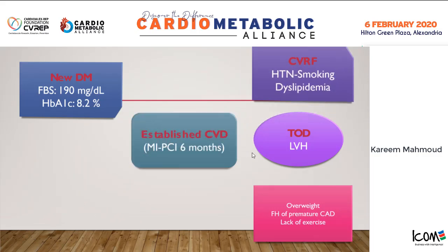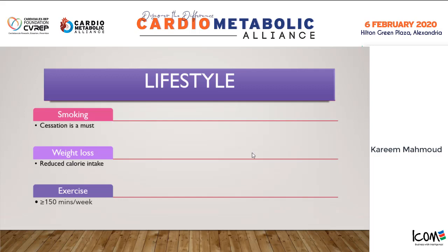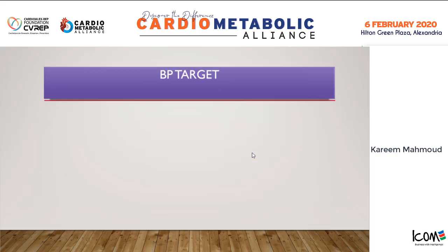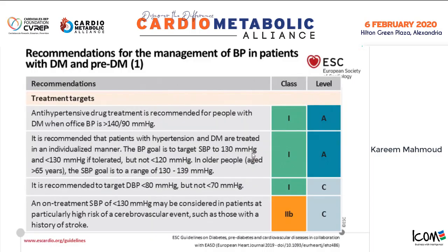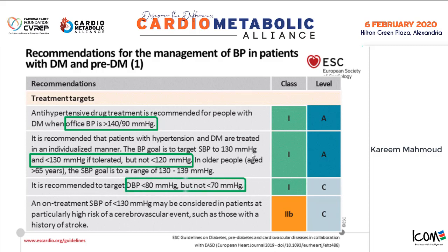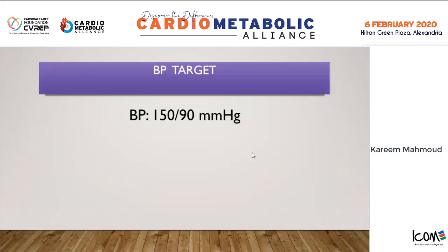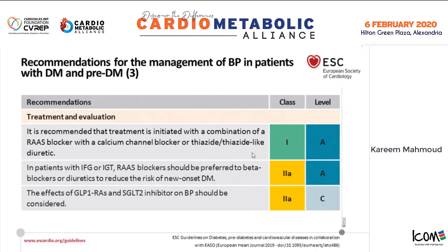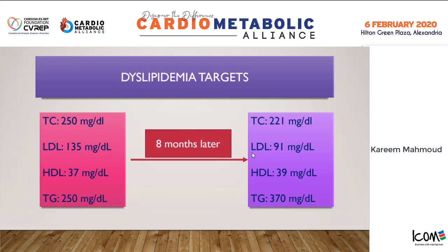Moving to risk factors: lifestyle modification is very important. The patient should stop smoking, reduce weight and caloric intake, and exercise regularly. Regarding blood pressure, the patient has a BP of 150/90, which is not acceptable. The target should be less than 130 but not less than 120 systolic, and diastolic less than 80 but not less than 70. The patient is currently on an ARB/diuretic, which is a good drug, but since the blood pressure target is not being achieved, we should add a calcium channel blocker.